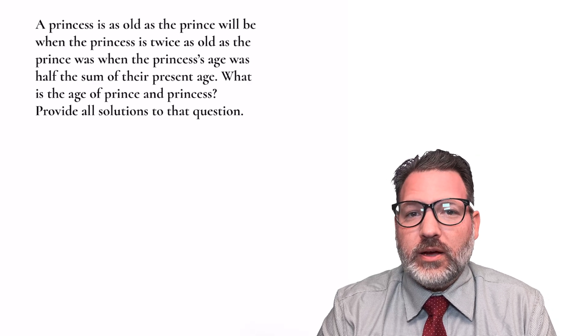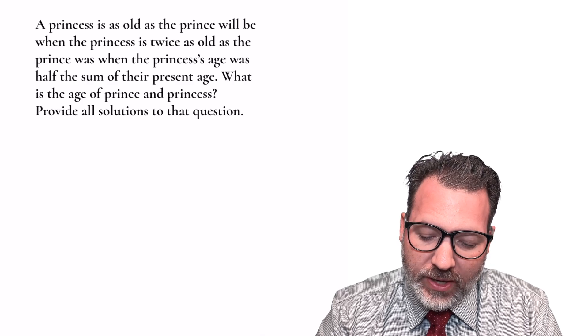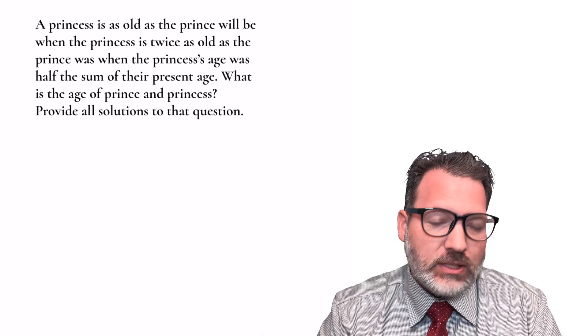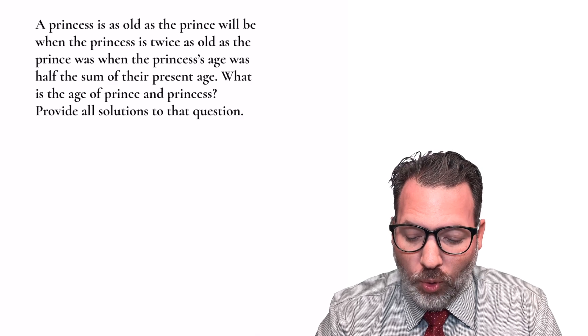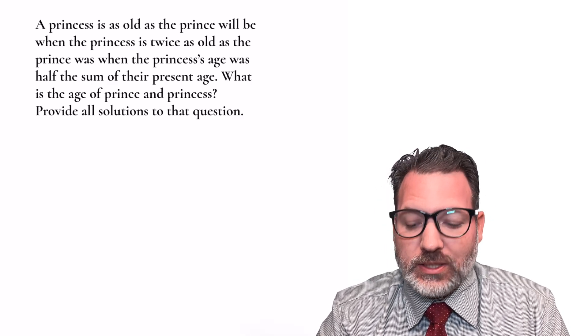And so we're going to figure this out right now. A princess is as old as the prince will be when the princess is twice as old as the prince was when the princess's age was half the sum of their present age. What is the age of the prince and princess? And provide all solutions to that question.